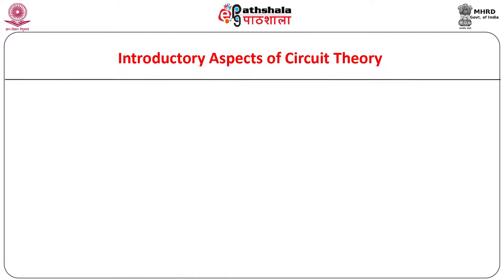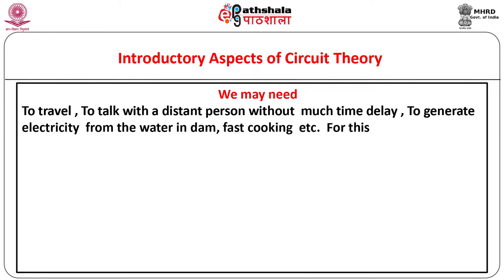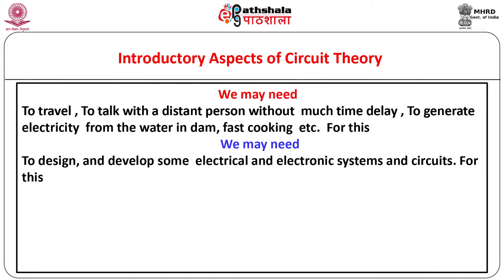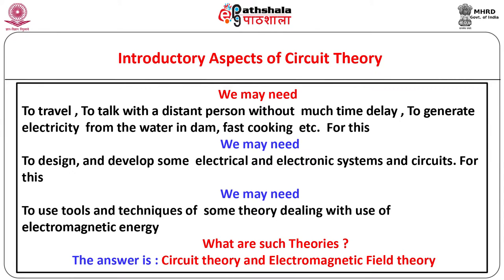Many times, for some specific application, we may need to develop some device using electrical energy — for example, for travelling we may need a vehicle, or to talk with a distant person without much time delay, or to generate electric power from water in a dam. For this, we need to develop some electrical or electronic systems. Two main theories — circuit theory and electromagnetic theory — are of direct concern with designing such systems for real life applications.